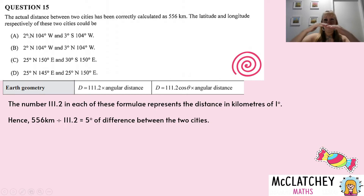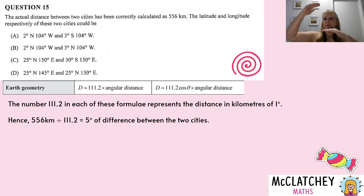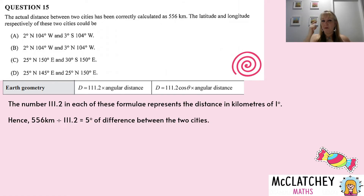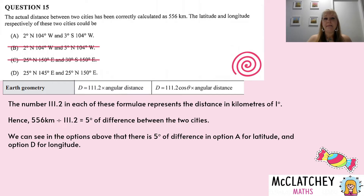Option A has 2 degrees north and 3 degrees south of the equator — that's a five-degree difference, so A is a possibility. Option B has the same longitude of 104 degrees, and the latitudes are 2 degrees north and 3 degrees north — only a one-degree difference, so B is ruled out. Option C has 25 degrees north and 30 degrees south — that's actually a 55-degree difference, so C is eliminated. Option D has the same latitude of 25 degrees north but different longitudes: 145 and 150 east — a five-degree difference, so D is also a possibility.